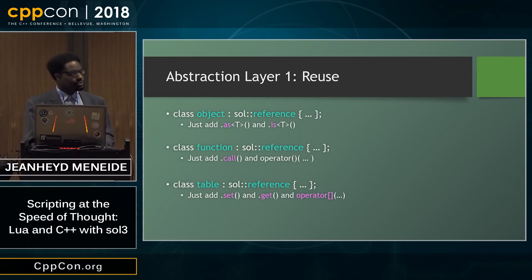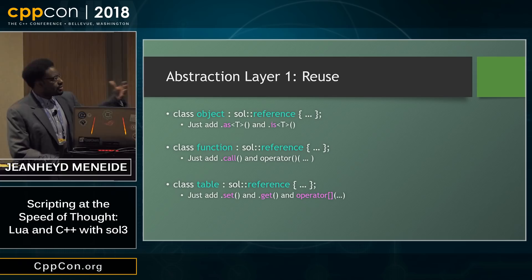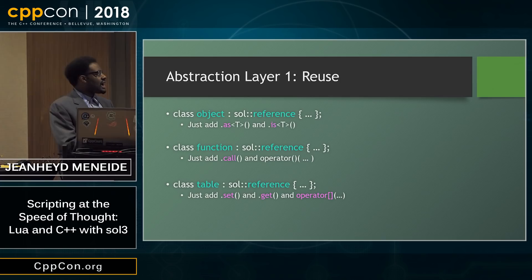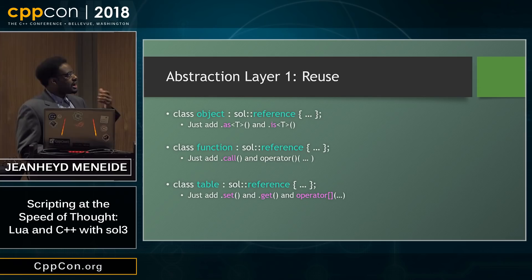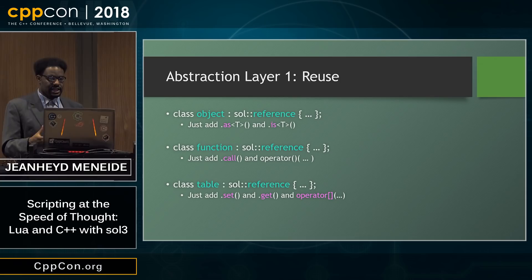We define objects, we define functions. In this case, we're just adding functions on top of what already exists on sol_reference. We have 'as' and 'is' for checking with stack::check and converting with stack::get. We have dot call for function and the call operator so that we can call things that we need to. We also have for table: set and get and the operator brackets. So we can get a similar API where we can index into things exactly the way that Lua does.